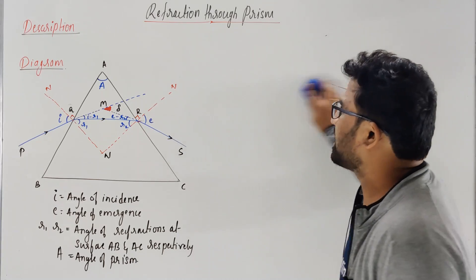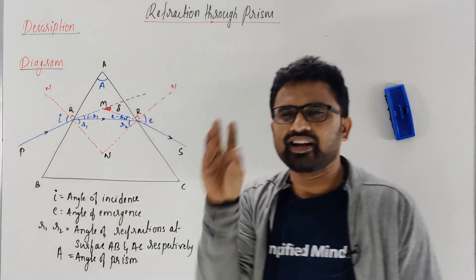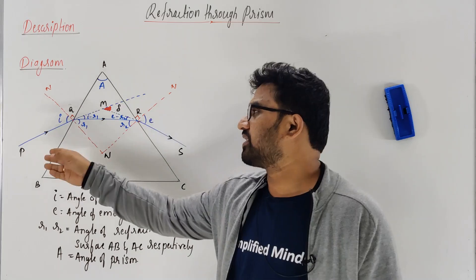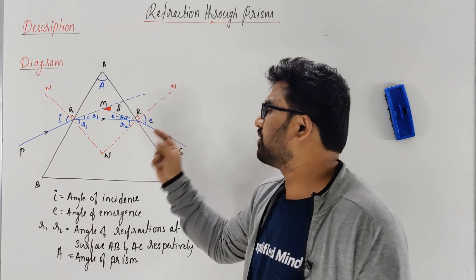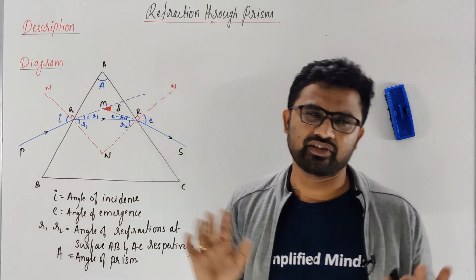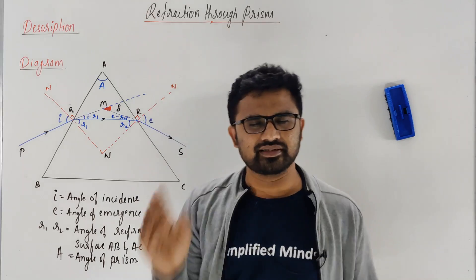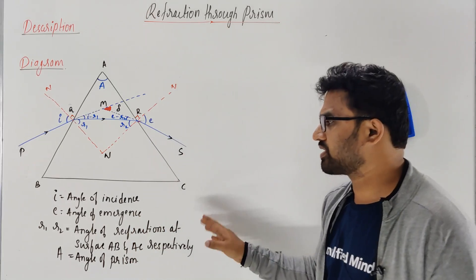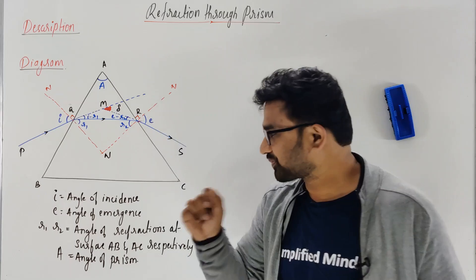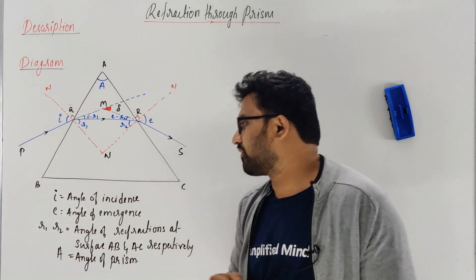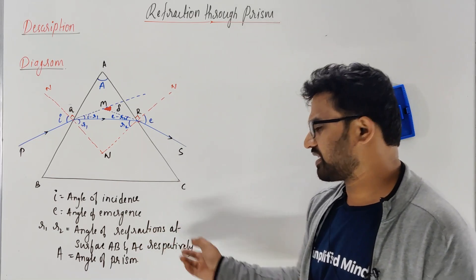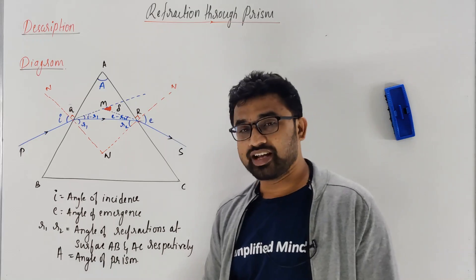So in the diagram you have the incident ray, refracted ray, and emergent ray through the triangular prism. Deviation is the angle between the incident ray and the emergent ray. In the diagram, please mention what is I, E, R1, R2 — because you need to score full marks in the derivation. I is the angle of incidence, E is the angle of emergence, and R1 and R2 are the angles of refraction at surfaces AB and AC respectively. A is called the angle of prism.